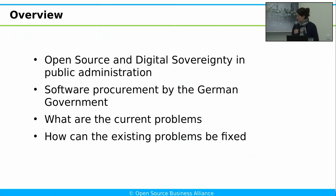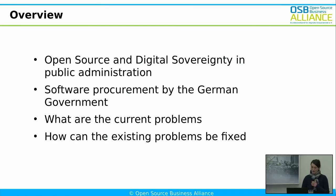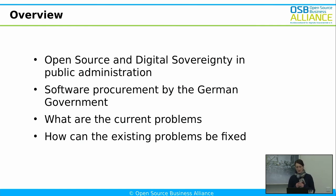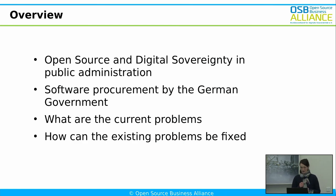Now I'm going to give you a short overview of what I want to talk about. Firstly, I want to look very briefly at the connection between open source and digital sovereignty. Then we're going to talk very briefly about how the software procurement process works in general by the German government. And then we are going to focus on three different problem areas, and at the end, we're going to look at how these problems maybe could be fixed.